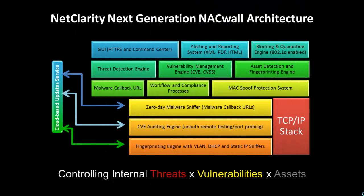Here's the architectural overview of the next-generation NACWAL. There's a graphical user interface and a command center in the larger appliances to manage remote units. There's an alerting and reporting system, a blocking and quarantining engine, and around that risk formula, a threat detection engine, a vulnerability management engine, and an asset detection and fingerprinting engine — with the ability to detect and block MAC address spoofers who might be trying to break into your wireless routers today.